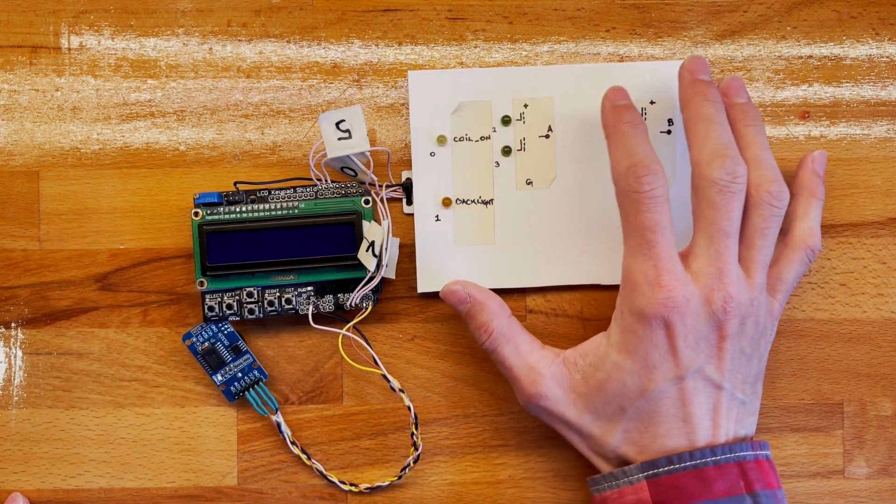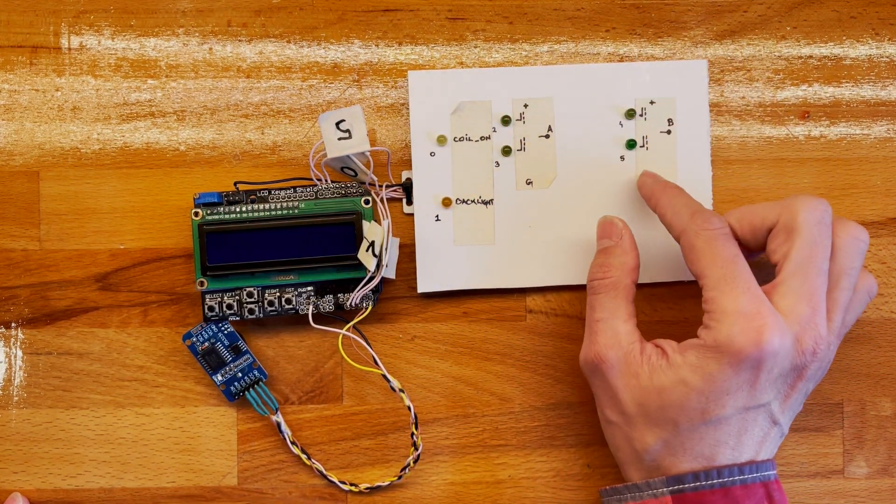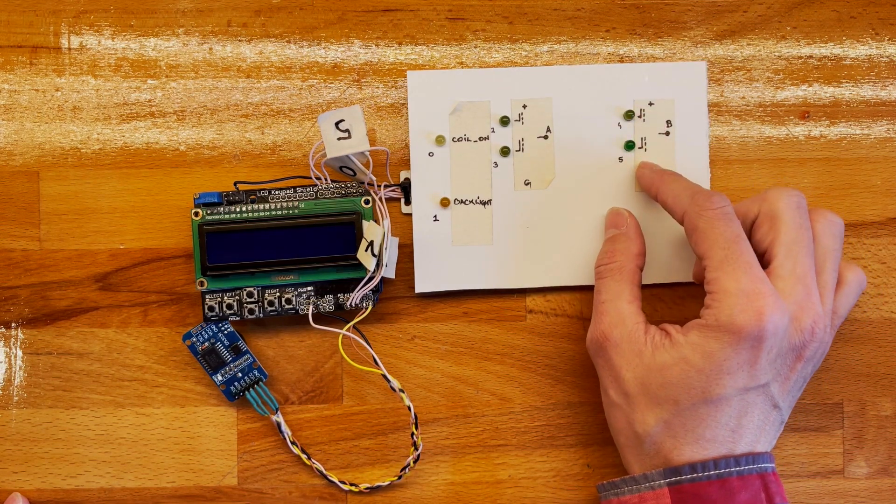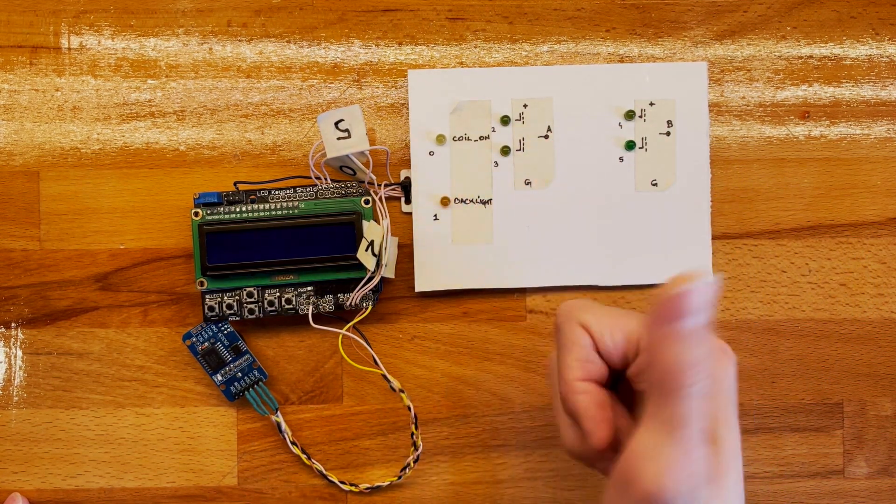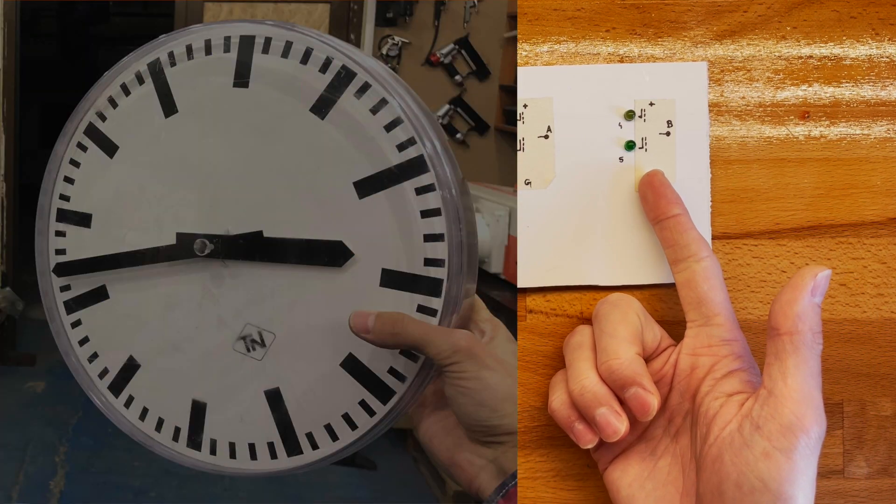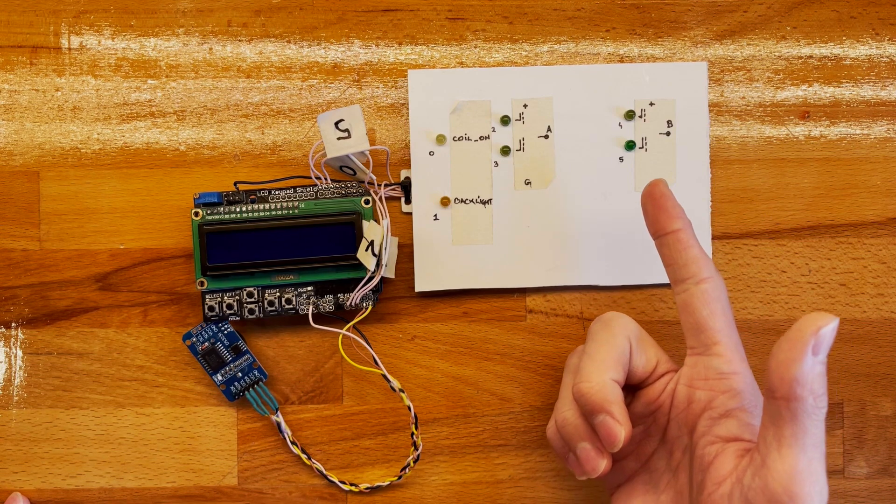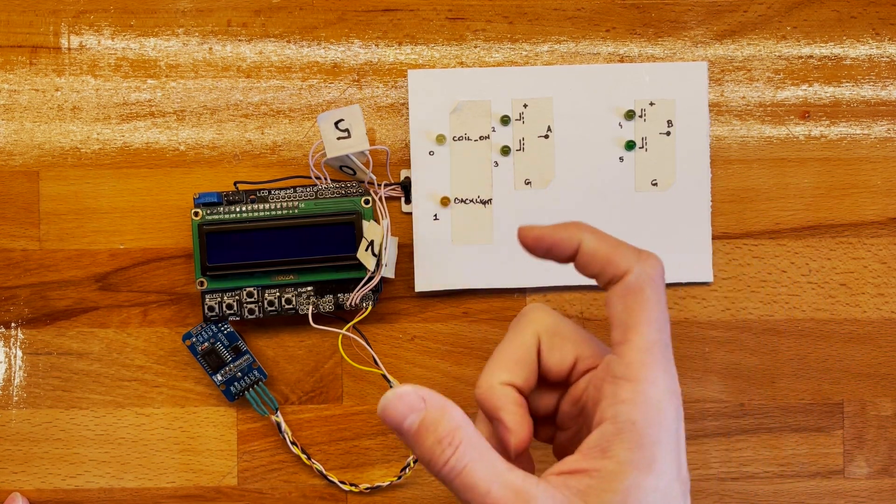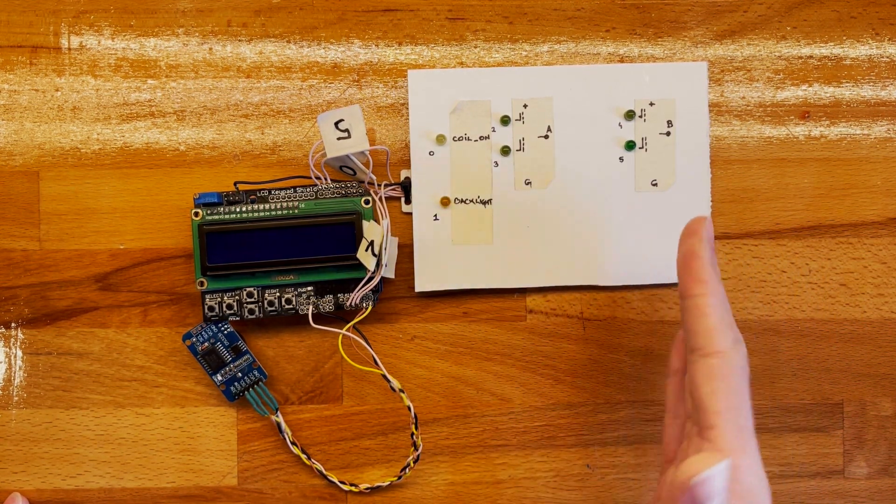Basically this clock has only a minute hand and an hour hand, and you can only move the minutes hand. It has two wires.